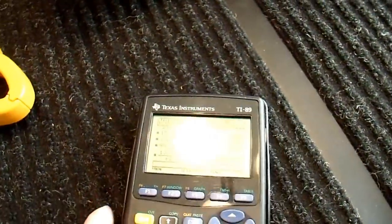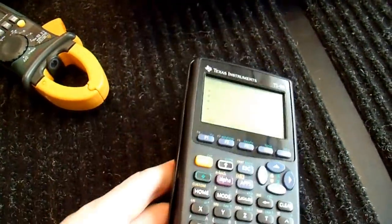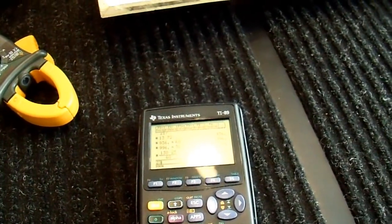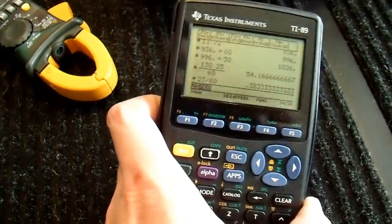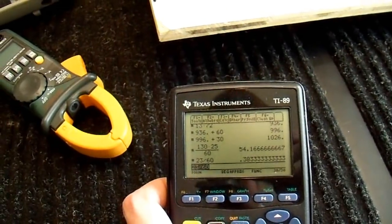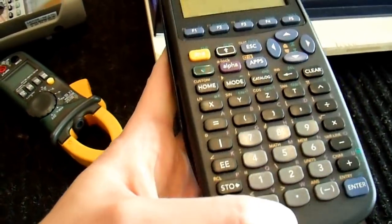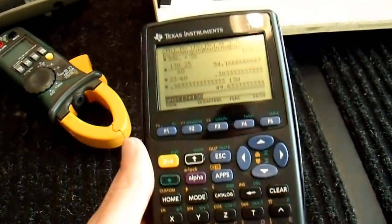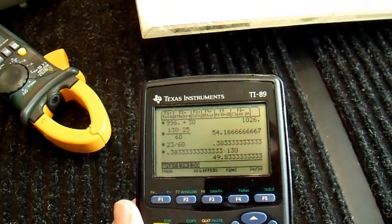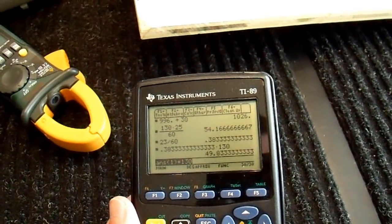So we're going to say 22 minutes. So if I go over to my ancient TI-89 calculator here, and type in 23 out of 60, that means it lasted for 0.38 hours. And we drew about 130 amps. So I'll type that in. And you can see that our battery output about 50 amp hours.